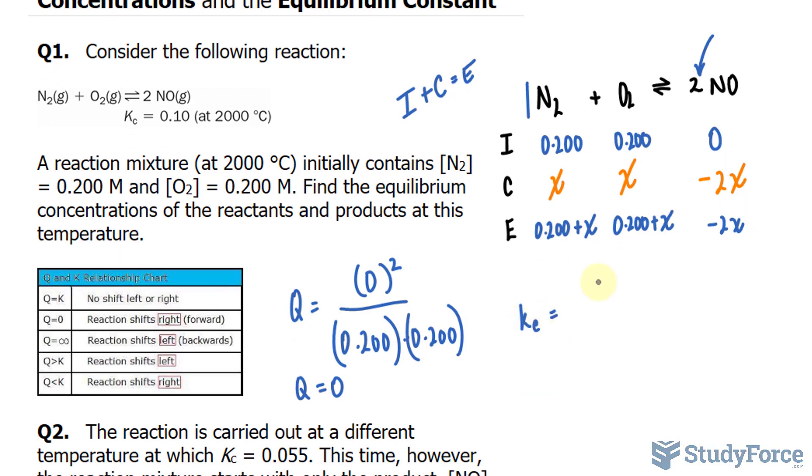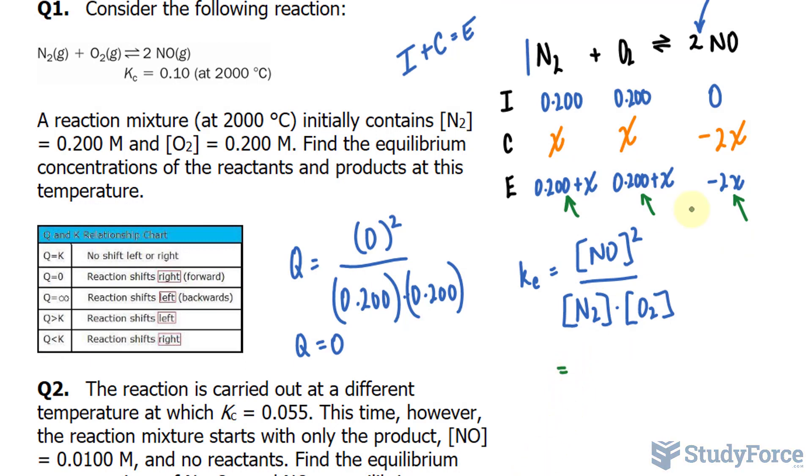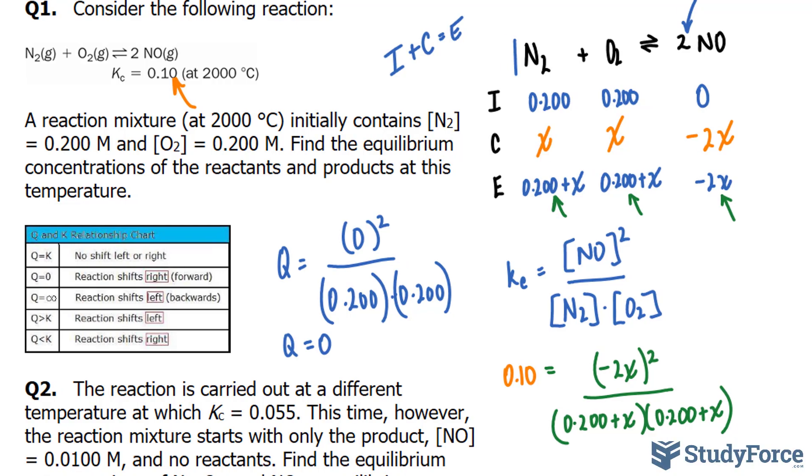Now we will create an equilibrium expression. So I'll say Kc is equal to NO raised to the power of 2 over N2 times O2. Let's replace all of these with their algebraic expressions. I'll replace NO with negative 2X raised to the power of 2, divided by the concentration of N2, which is 0.200 plus X, multiplied by 0.200 plus X. On the left side of this equation, Kc will be replaced with what was given in the question as 0.10.